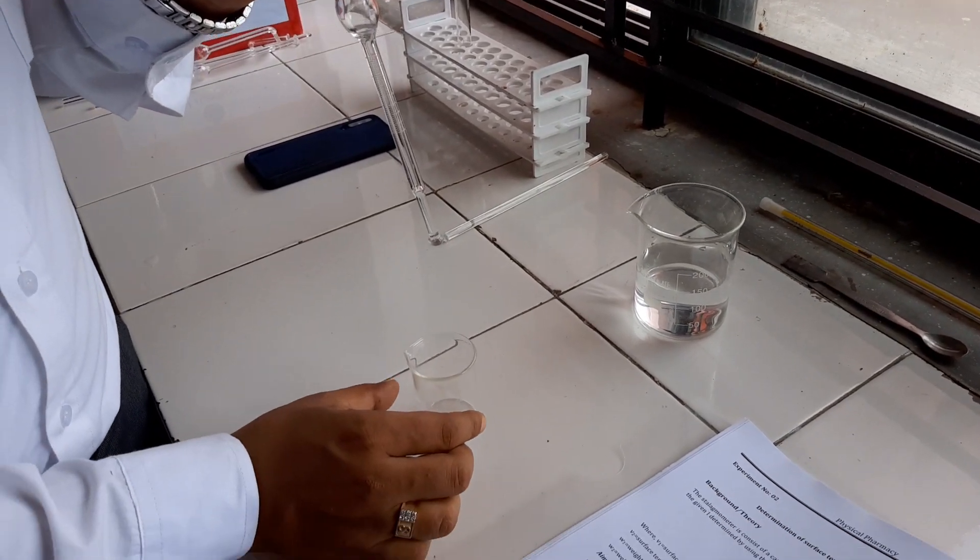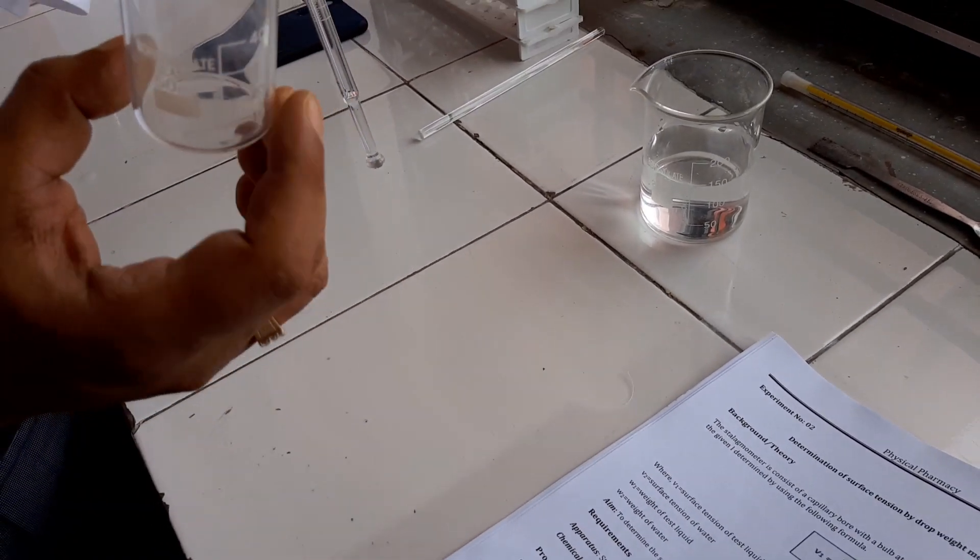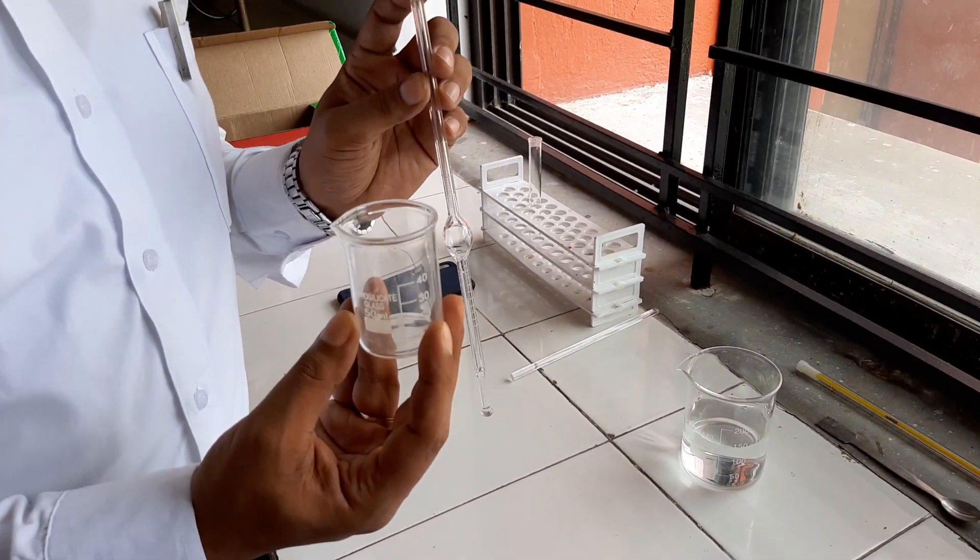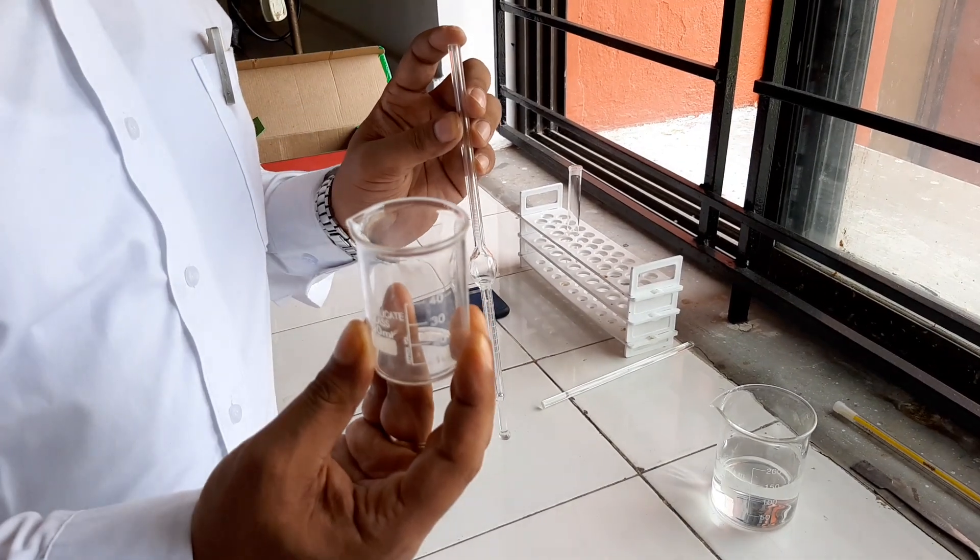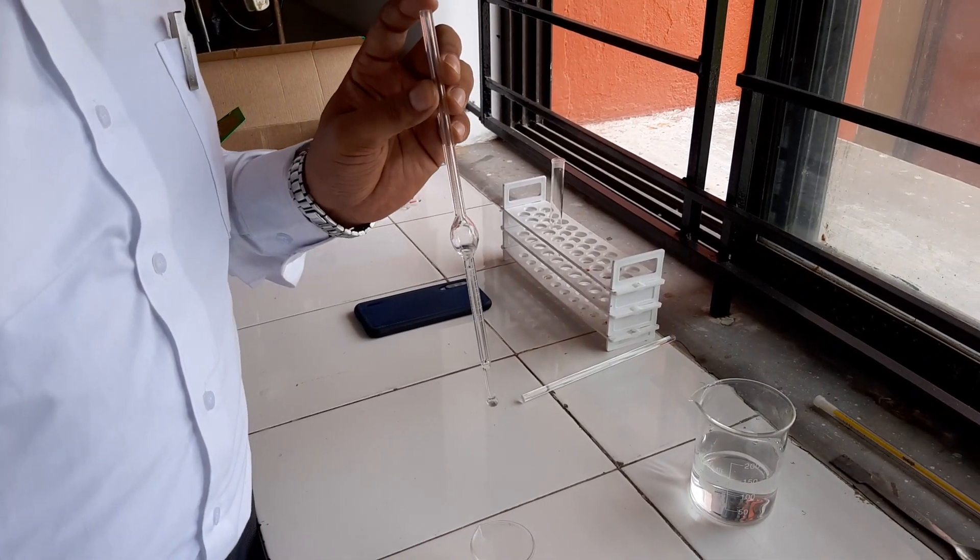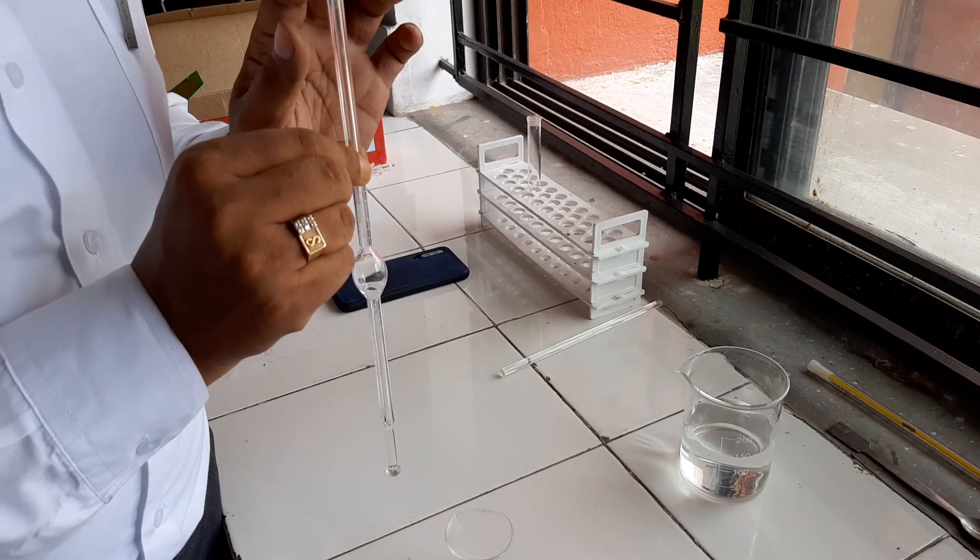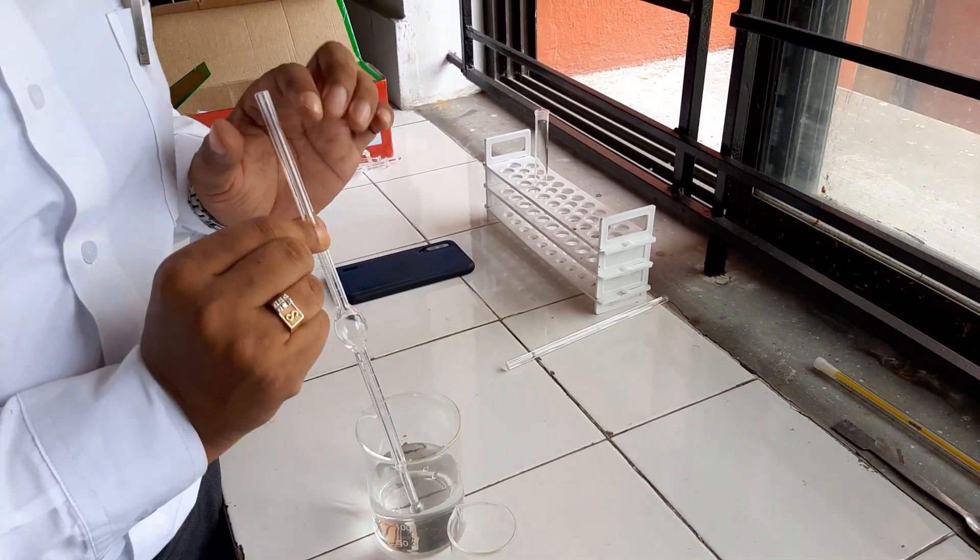For that, you have to take first one empty beaker and you have to take the empty weight of this beaker. For example, that is W1. Then, you have to suck the liquid from here up to this mark, the upper mark.